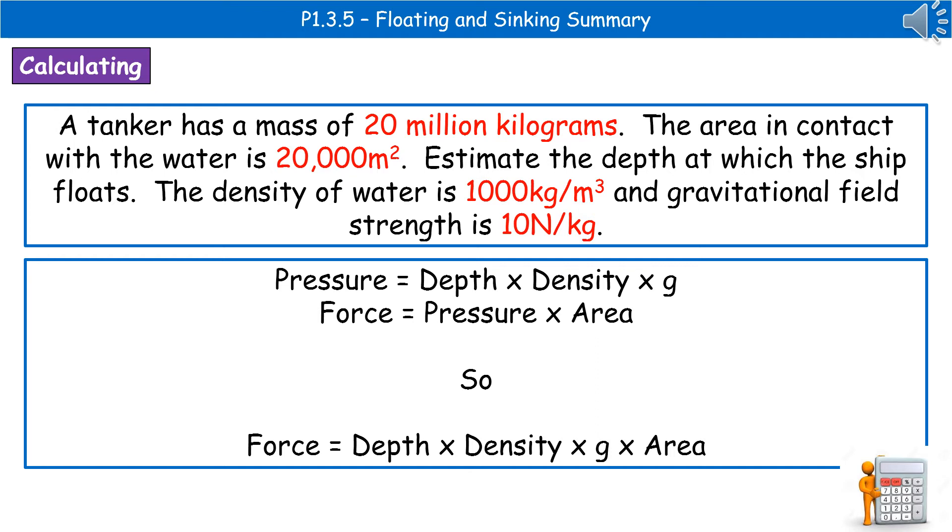But, what we do know is we can merge these two together, because if we obviously know that our pressure is depth times density times gravitational field strength, then we can substitute that in for the word pressure in our force. So, the force is the depth times density times gravitational field strength times the area.